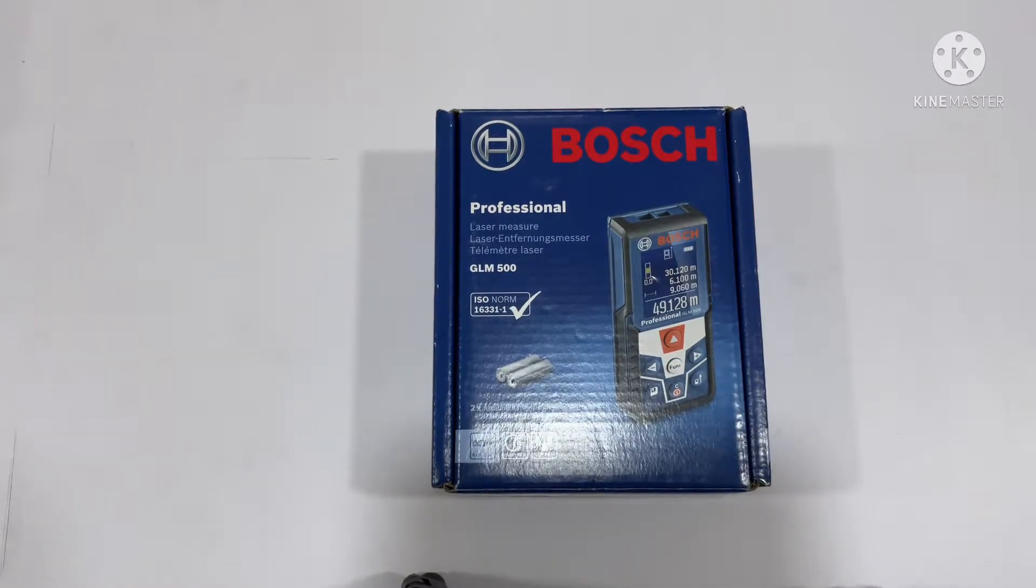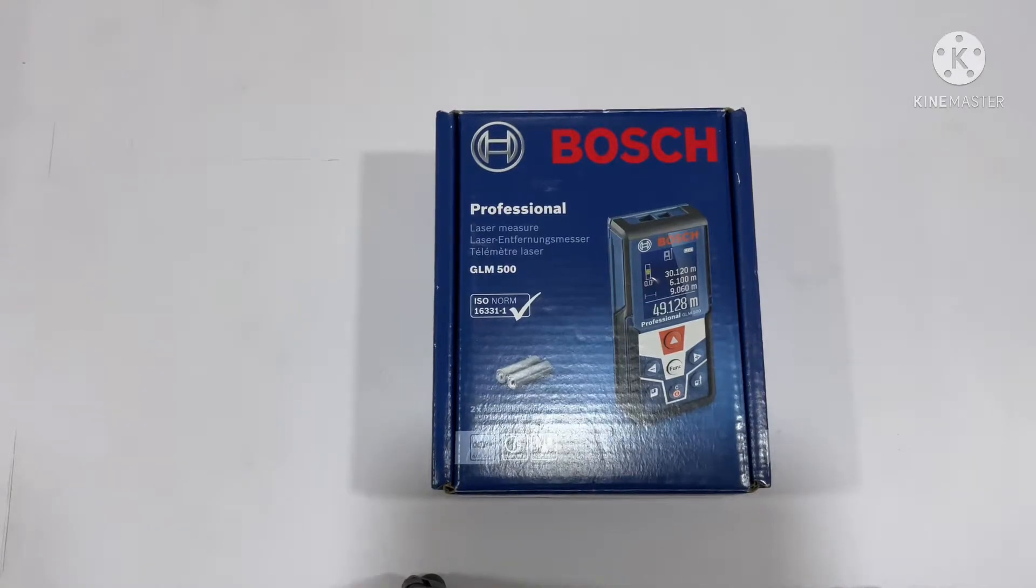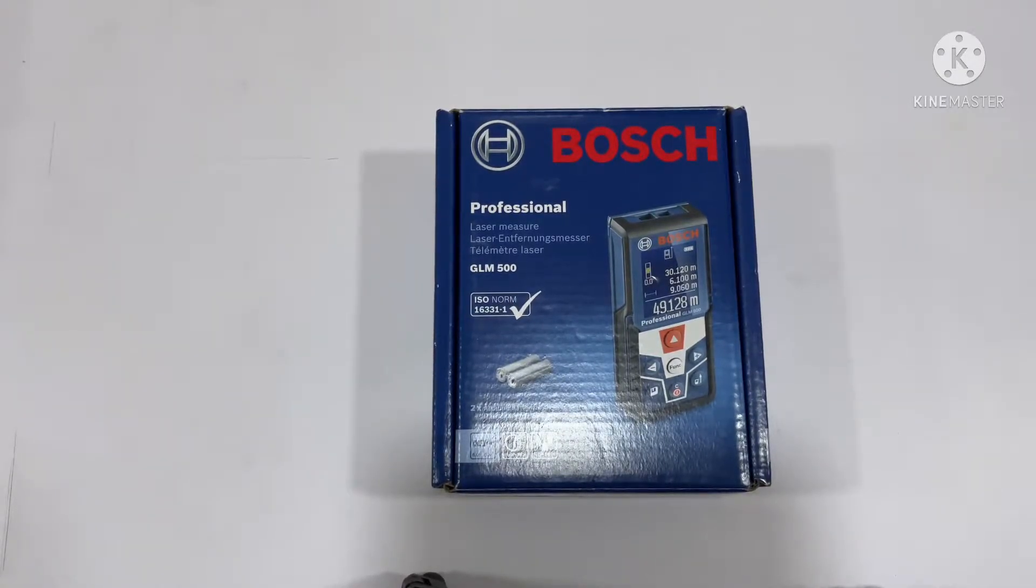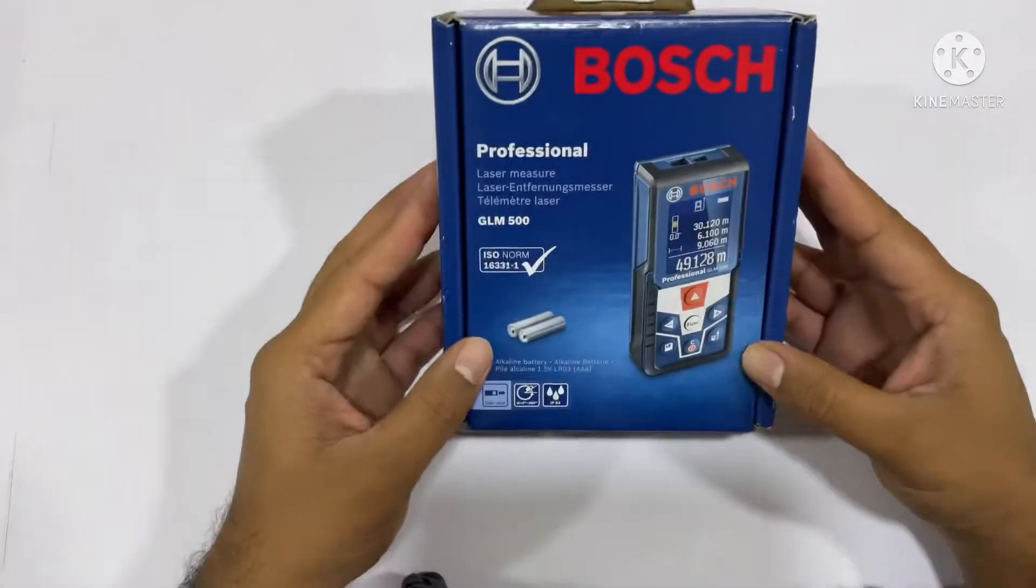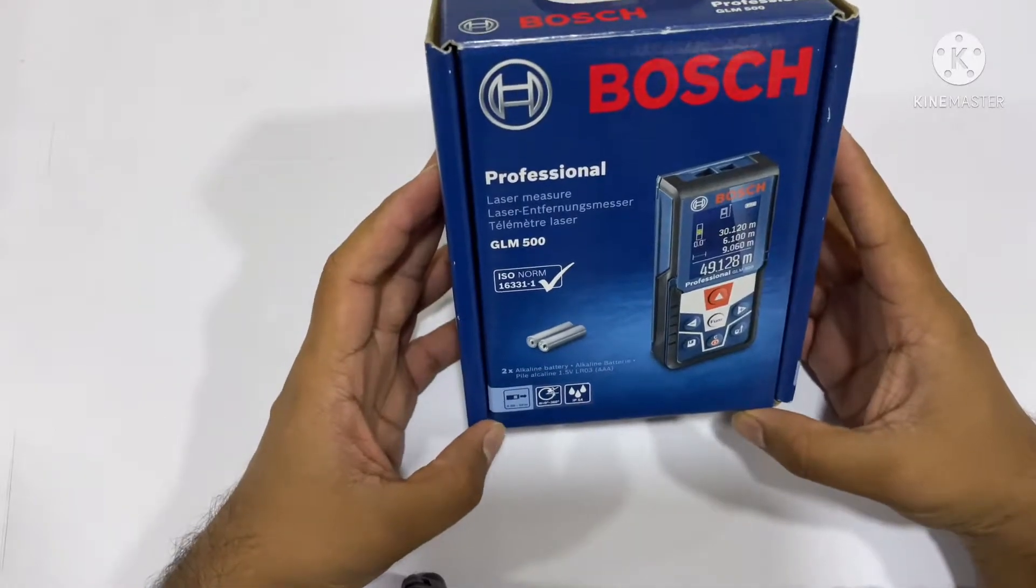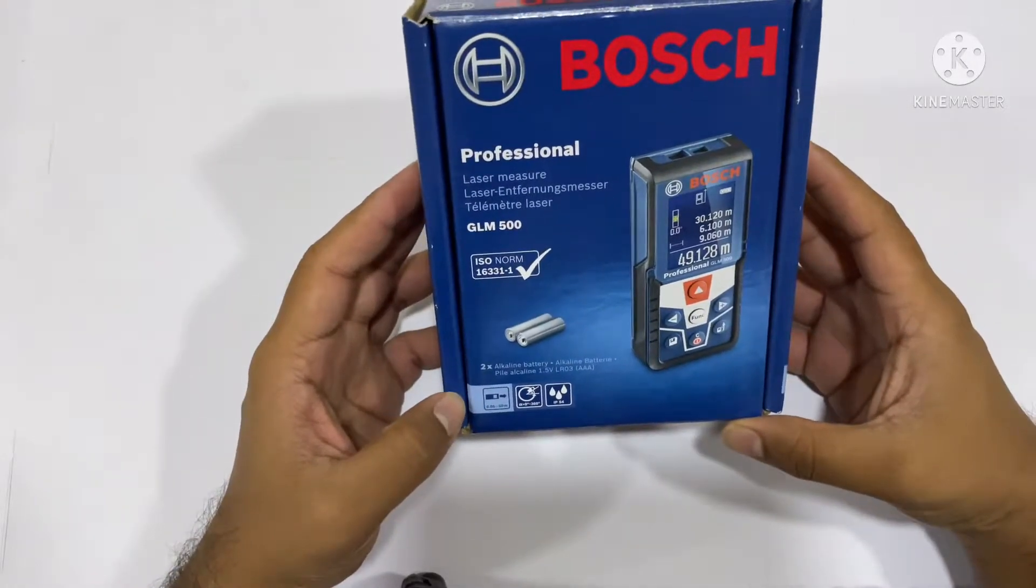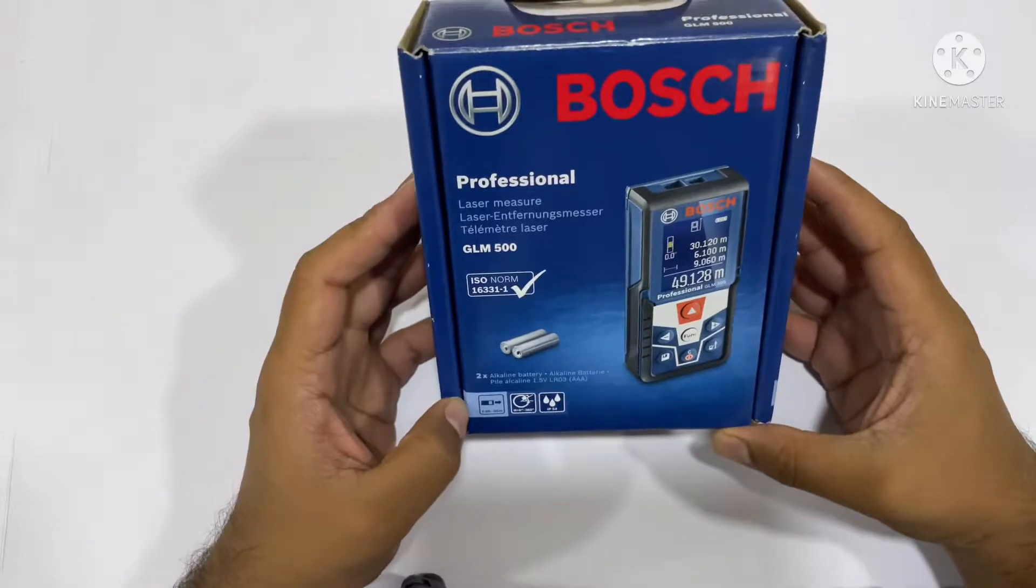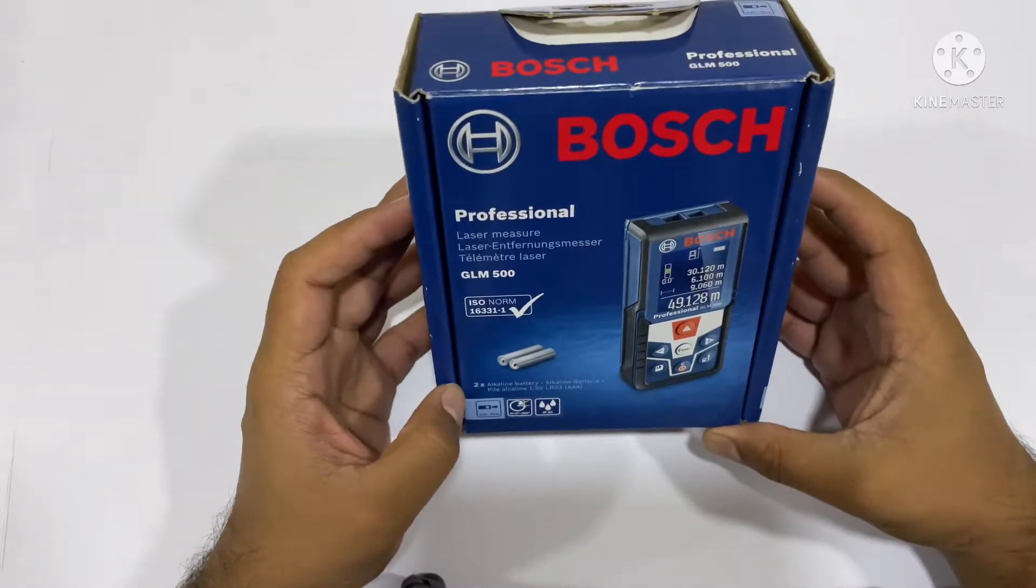Hello and welcome to Knowledge Bonds. Today we have the Bosch Professional GLM 500 laser measurement unit. This is one of the best sellers from Bosch company and has been used for several applications from civil engineers to site managers. Let's begin with the unboxing and then we'll give a short review about this product.